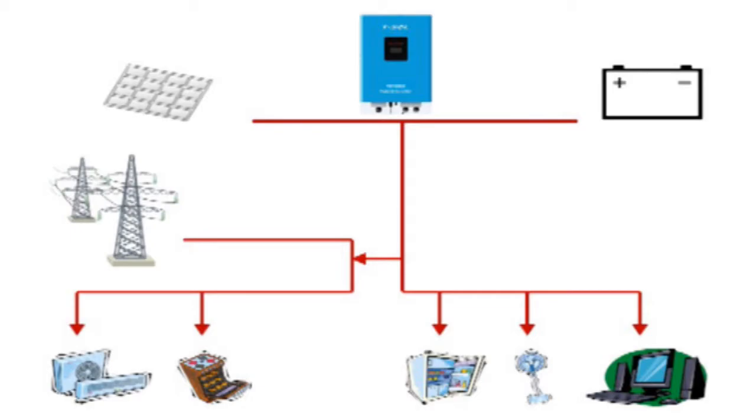If the surplus power is not sufficient to energize your on-grid loads, your loads will get power directly from the grid. However, these loads will only get the lacking power they need to run.